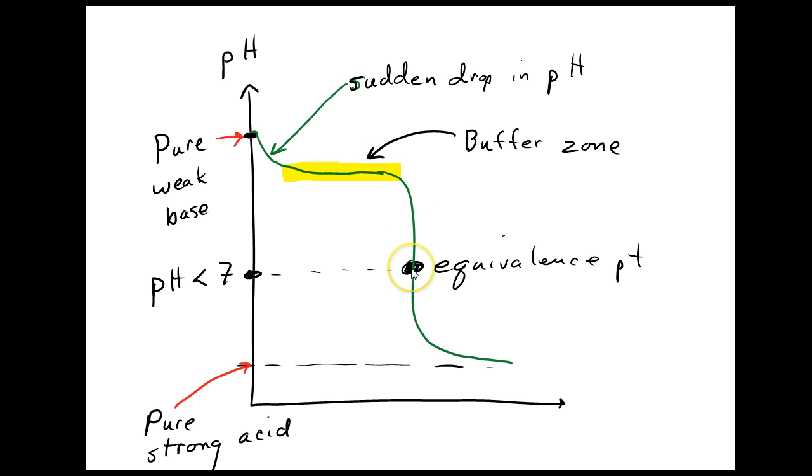Then we'll drop at the equivalence point, and the equivalence point is going to be at a pH of less than 7, because this is when I have equal amounts of strong acid with weak base. So the pH is going to be a little acidic. And then, eventually, we'll reach the pH of the pure strong acid.